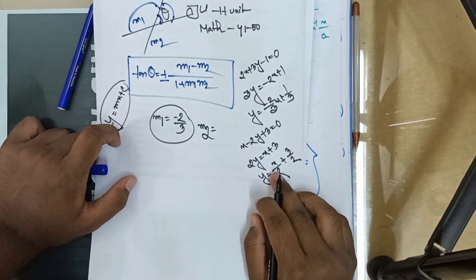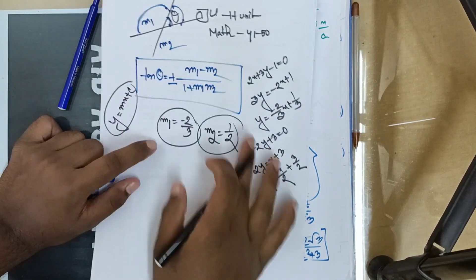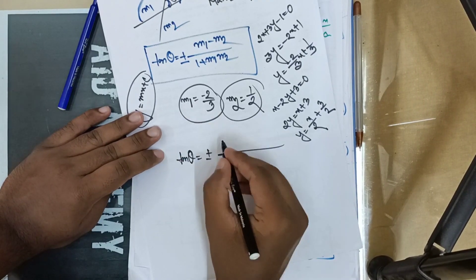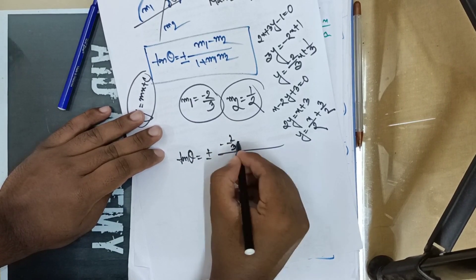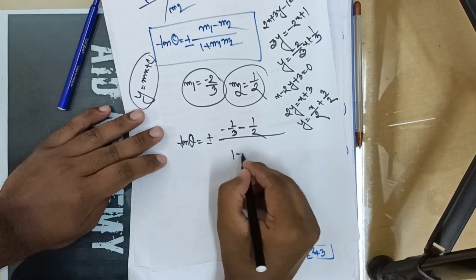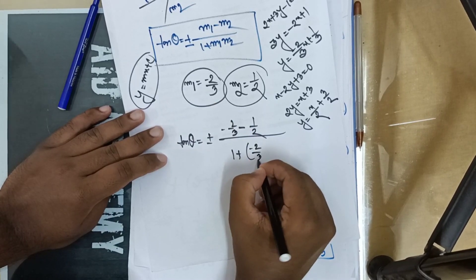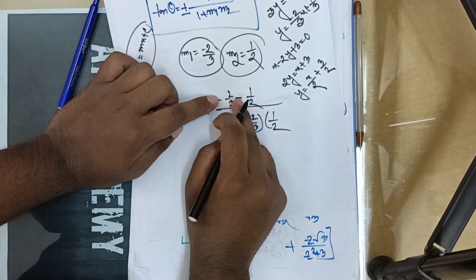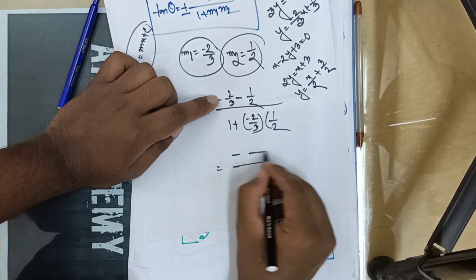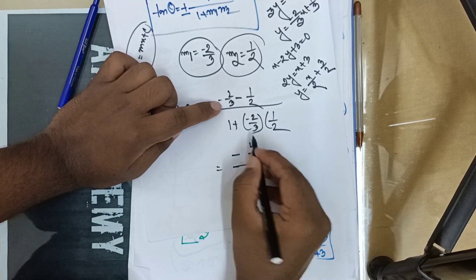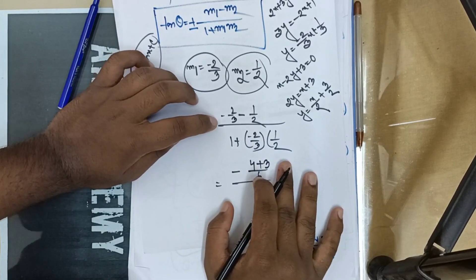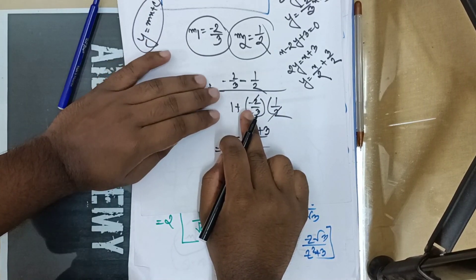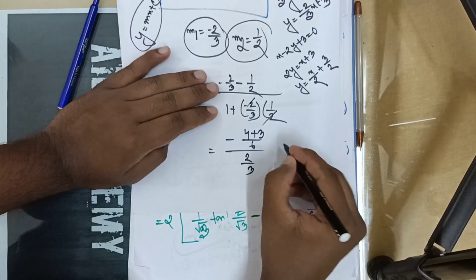Using values 1 and 2: (m1 - m2) / (1 + m1·m2) equals minus 2 by 3. So 1 plus m1 equals 2 by 3, which means m1 equals 2 minus 1. Taking 2 minus 2 by 3, we find alpha: 1 plus 1 minus 2/3, giving us values 3, 3, 4, and 3.